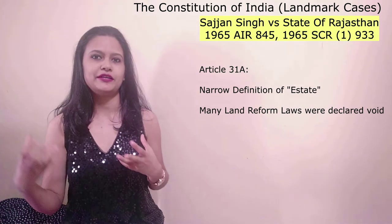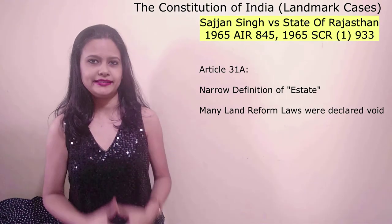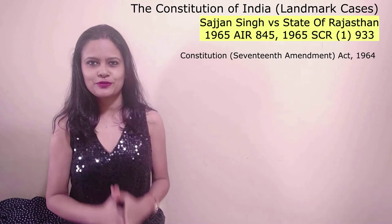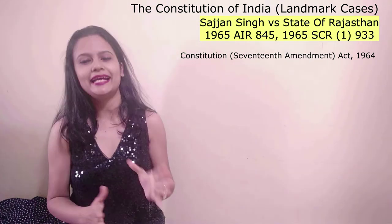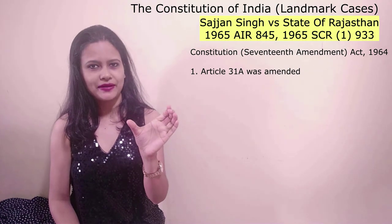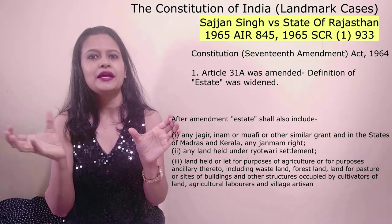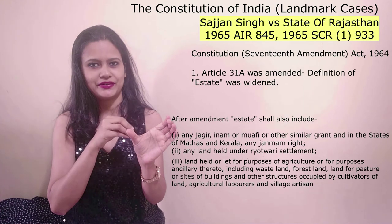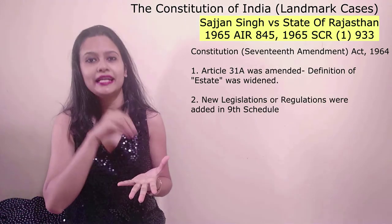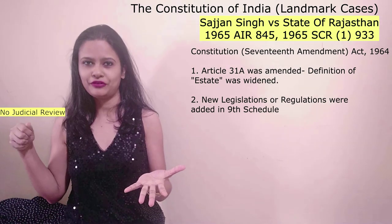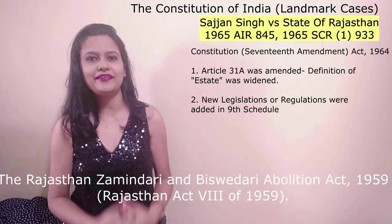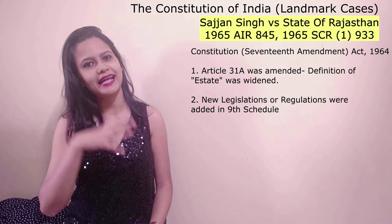In order to tackle all these difficulties, another constitution amendment act was brought by the government — the Constitution 17th Amendment Act of the year 1964. First, it amended Article 31 Clause A, widening the definition of the term 'estate' so that many other areas could also be included under it. Additionally, a few other regulations or legislations were also inserted under the 9th Schedule, placing them outside the purview of judicial review. Among these, the Rajasthan Tenancy Act 1955 and the Rajasthan Zamindari Abolition Act of 1959 were also inserted under the 9th Schedule of the Indian Constitution.